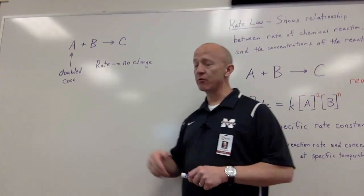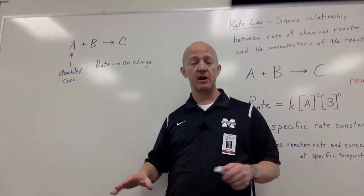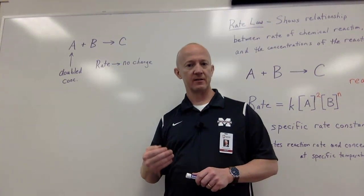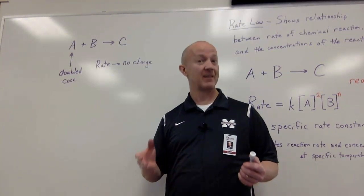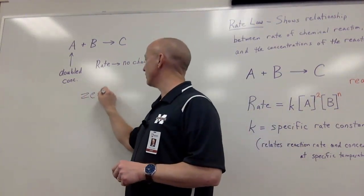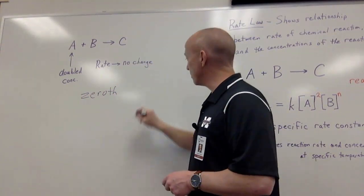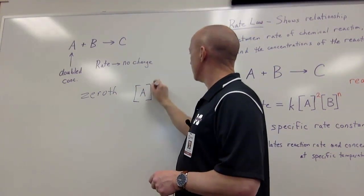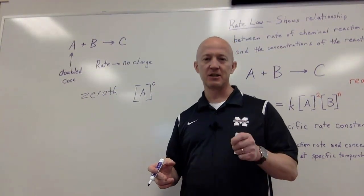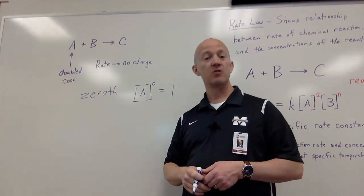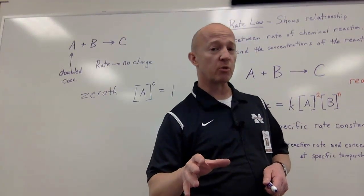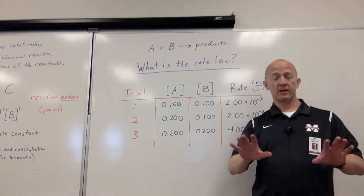One last thing: if I have a reaction and I double the concentration of one of my reactants, but measuring the rate shows absolutely no change at all, that reactant has zero effect on the reaction rate. We call that zeroth order. We would write that reactant as A to the zeroth power. This is important because anything to the zeroth power equals one, so in the rate law, that term cancels out completely.